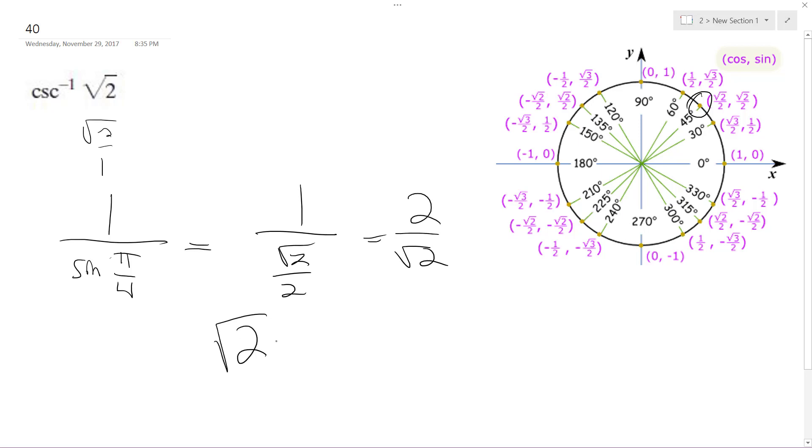You can break two into square root of two times square root of two over square root of two. These cancel out, and we get square root of two.